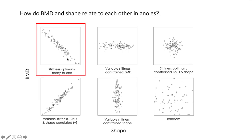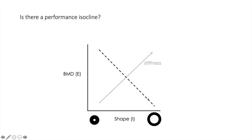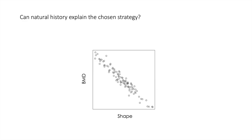Even if we find a negative relationship supporting a scenario of many-to-one mapping, we will have to ask ourselves if this relationship actually represents a performance isocline — we have to test whether performance along this isocline is actually the same. And even then, we can further ask whether natural history could explain why some species are at different positions along this relationship.